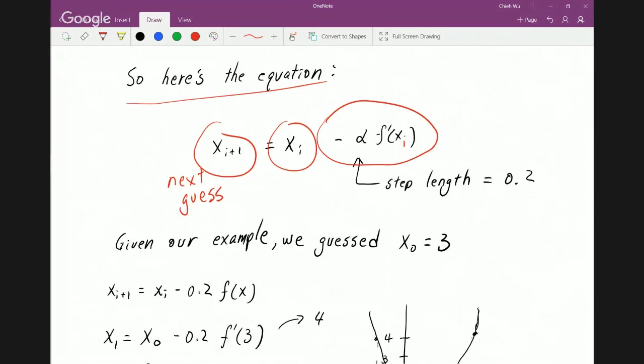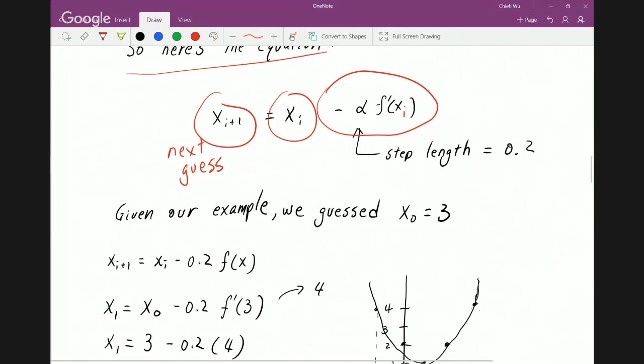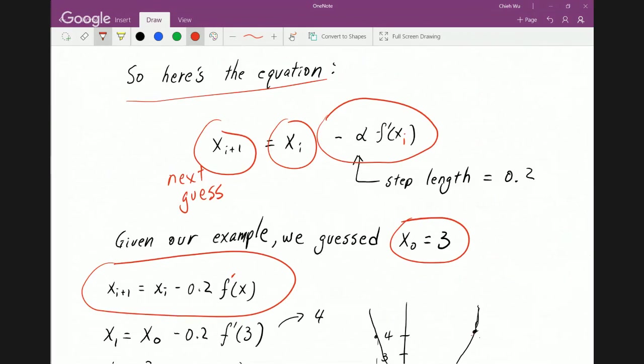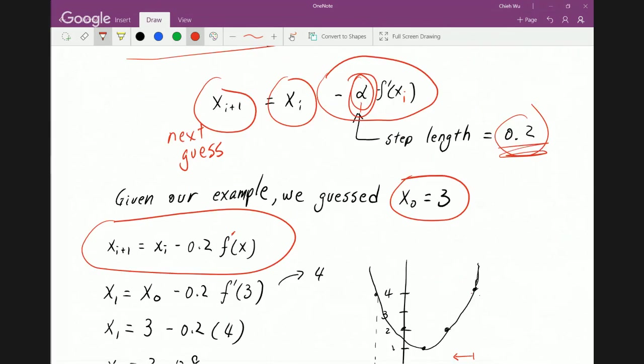So let's do a quick example. Remember, we guessed 3, right? Now, here's the equation that we're looking at. Oh yeah, alpha. I forgot to talk about alpha. Now, alpha is called the step length. And for now, we will talk more about alpha later. But for now, we'll just assume alpha is 0.2. Okay, now we can start with our example.